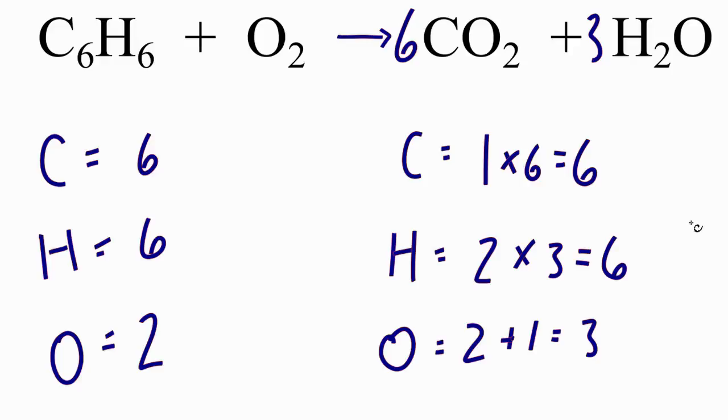Now we need to deal with the oxygens, and since we've changed these coefficients, we have to add our oxygens up again. We have six times two, 12 oxygens, plus three times the one, three there, and that gives us 15. So now we have 15 oxygens on the product side, and two on the reactant.